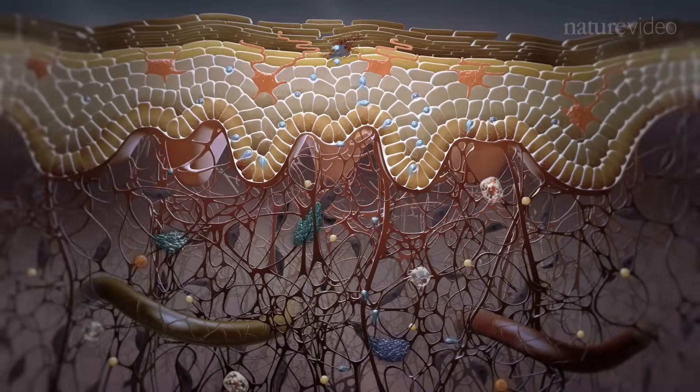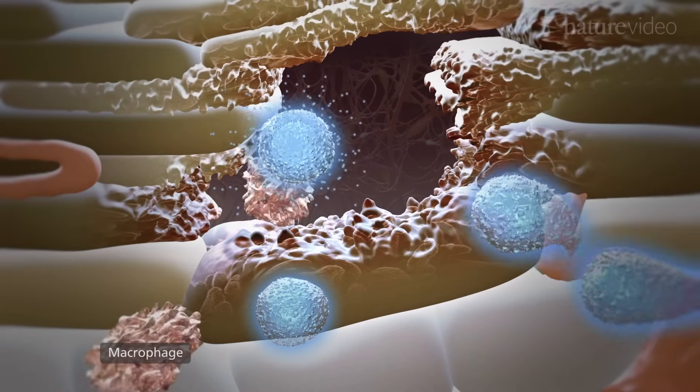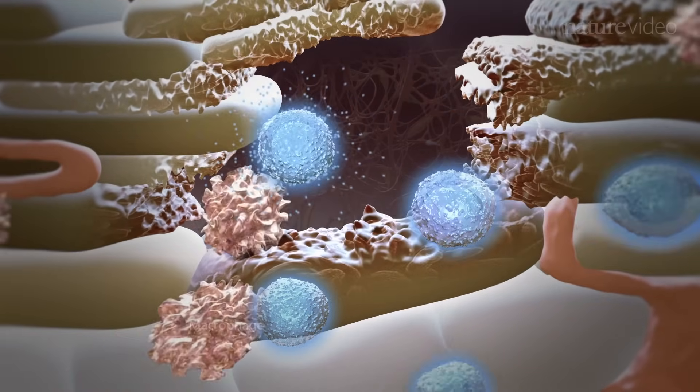Activated T-cells return to the skin and kill infected keratinocytes to control viral infection or secrete signals that recruit additional immune effector cells.